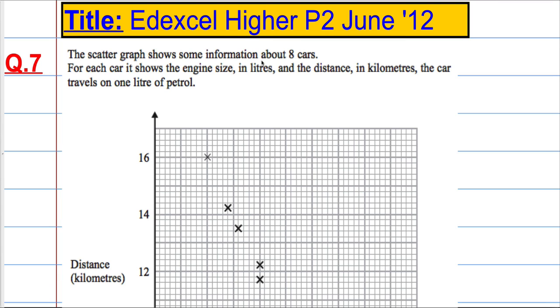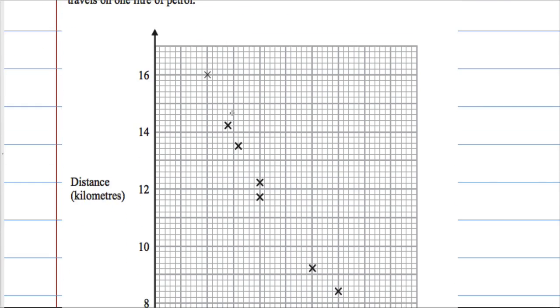In question 7 we're given a scatter graph and it shows some information about eight cars. For each car it shows the engine size in litres and the distance in kilometres the car travels on one litre of petrol.